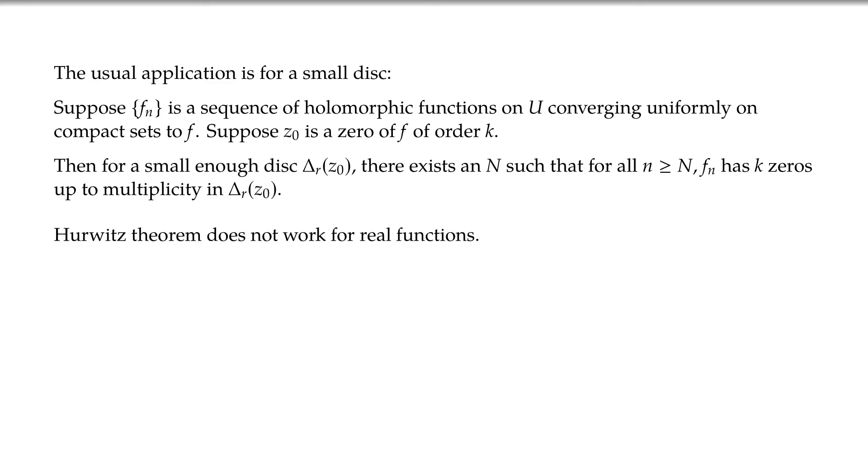Now, Hurwitz does not really work for real functions. So here's an example. Suppose that I take just real functions, so x is going to be a real number. So f is now a function from the real line to the real line, and it's x^2. That has a zero at zero, and f_n, let it be x^2 + 1/n. Now, f_n goes uniformly to f, but f_n is never zero, despite F having a zero of order two at the origin.